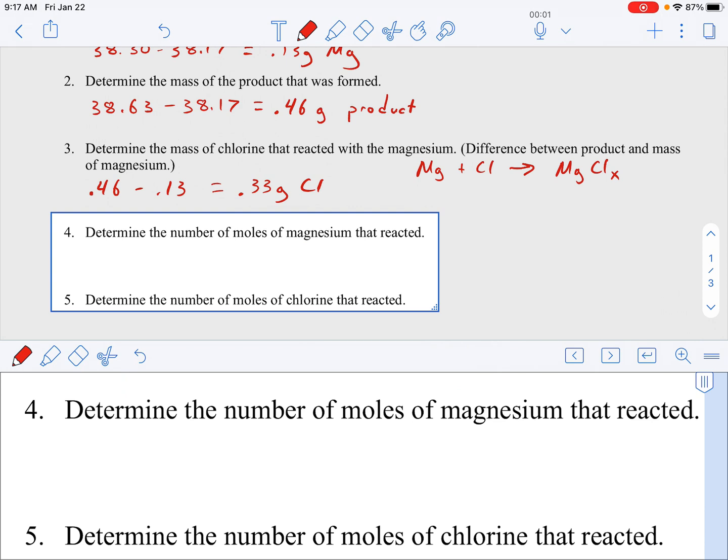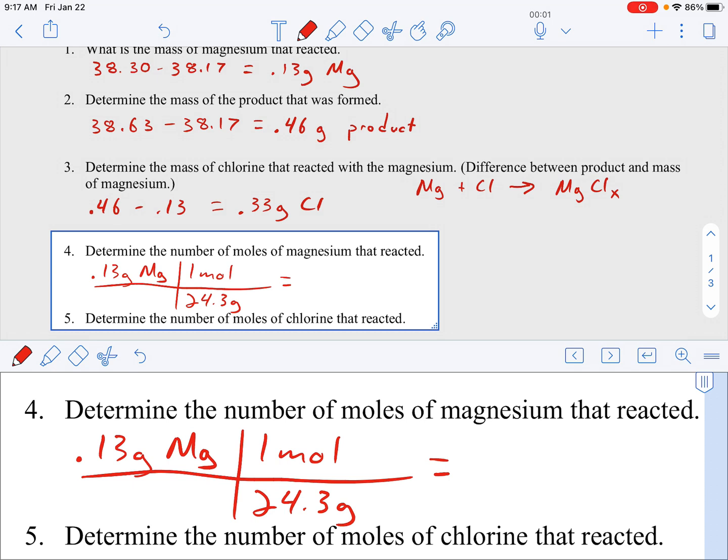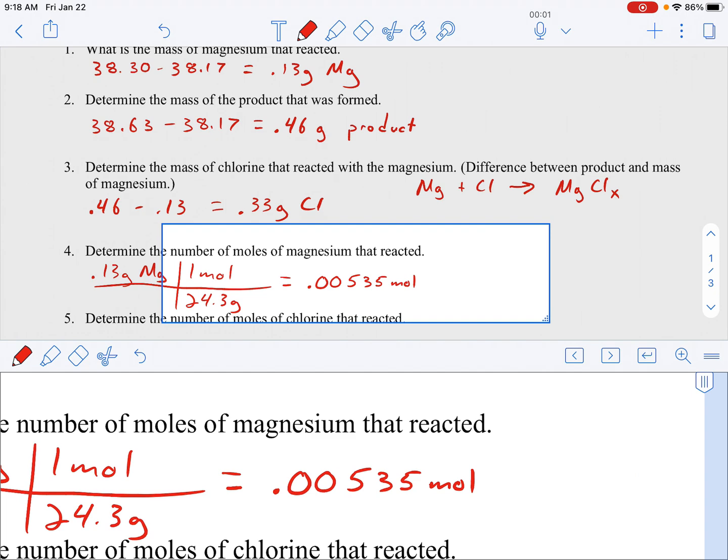So question number four, determine the number of moles of magnesium that reacted. We had 0.13 grams of magnesium. The molar mass of magnesium is 24.3 grams. So 0.13 divided by 24.3. If I look at 0.13, that's only two sig figs, so I'm going to have three sig figs here. So 0.00535 moles of magnesium.